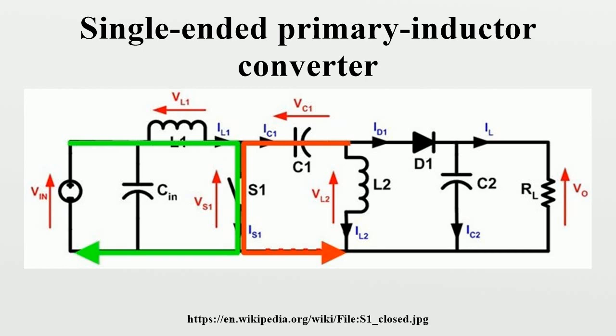When switch S1 is turned on, current IL1 increases and the current IL2 goes more negative. The energy to increase the current IL1 comes from the input source.